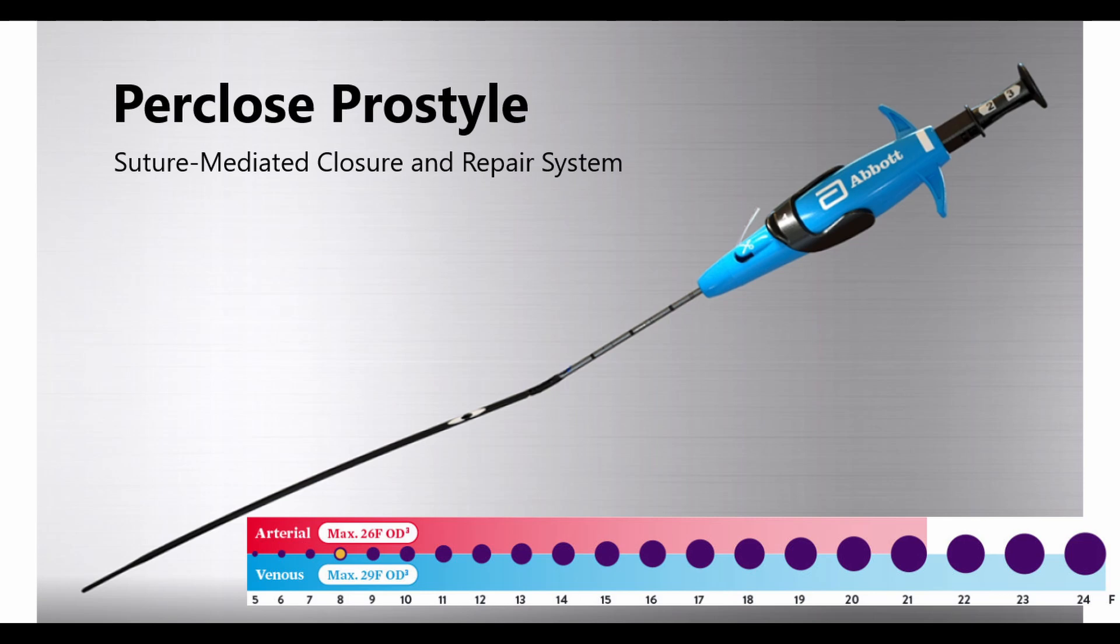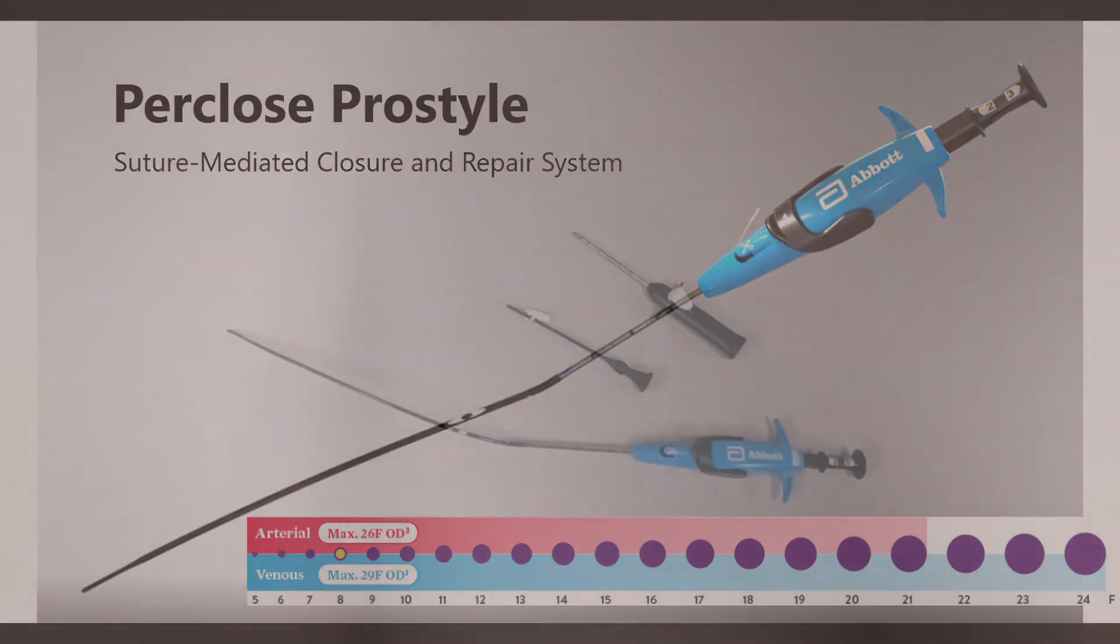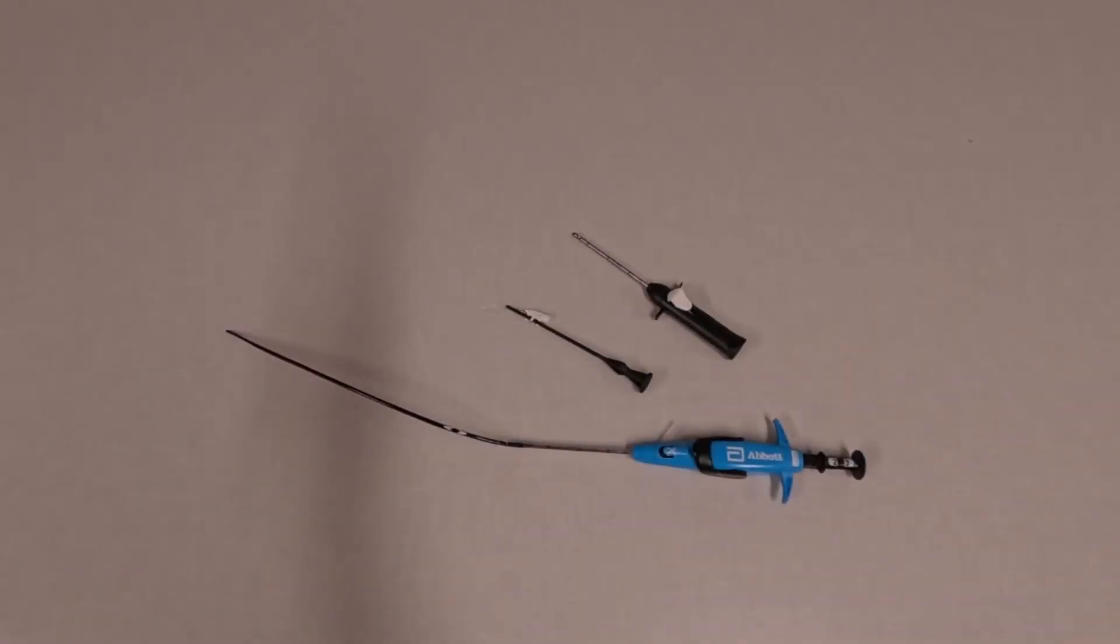When first learning closure devices I remember Perclose feeling very imposing because there are many steps and it feels very unnatural to throw a suture when you're not pressing down on the knot. Once you learn Perclose I think that it's very useful and it's actually the only closure device that you can re-access immediately because there is no clotting mechanism. It's a suture that's being tied around the arteriotomy or venotomy.